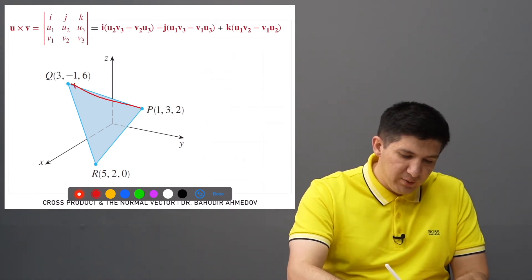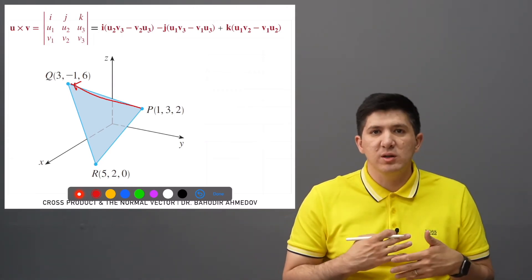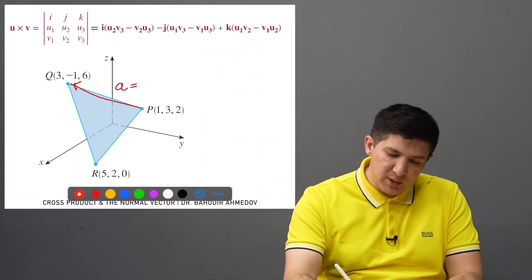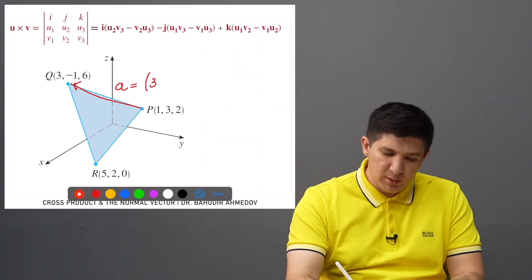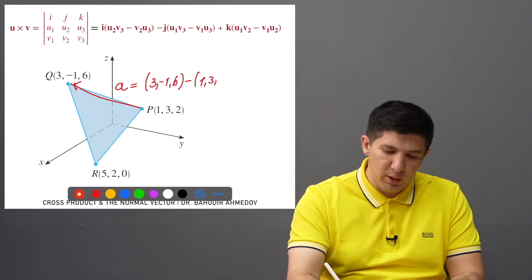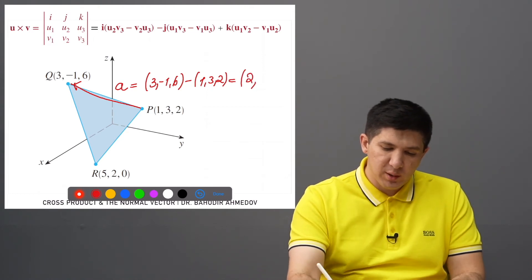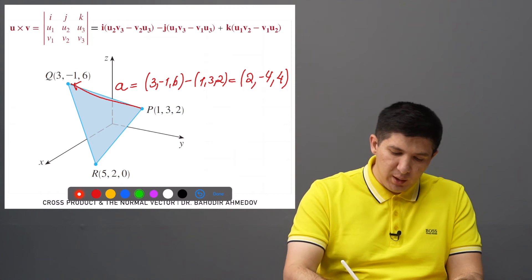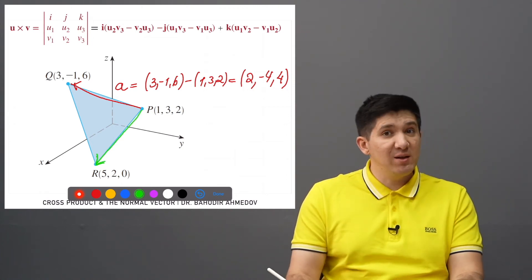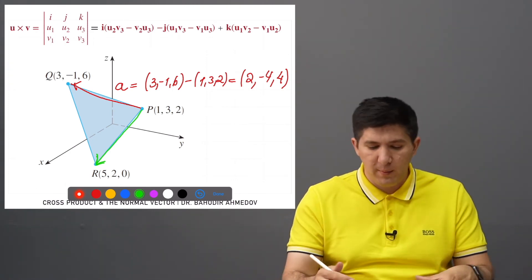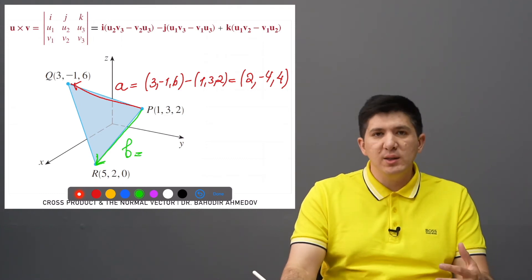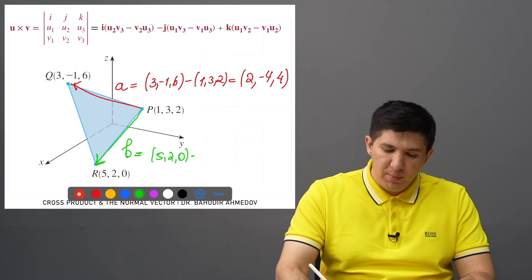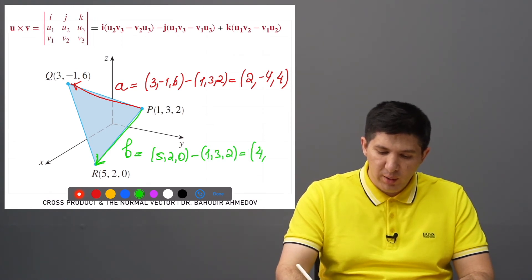I'll connect points p and q to get the first vector. To create a vector from two points, subtract the starting point from the ending point. So vector a = q − p = (3−1, −1−3, 6−2) = (2, −4, 4). Then I'll connect p and r to get a second vector b on the plane: b = r − p = (5−1, 2−3, 0−2) = (4, −1, −2).